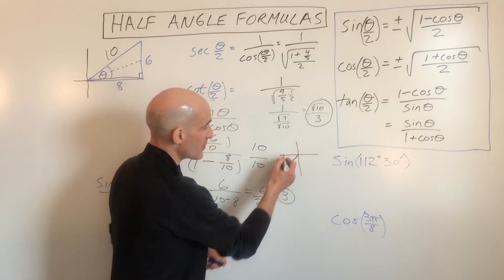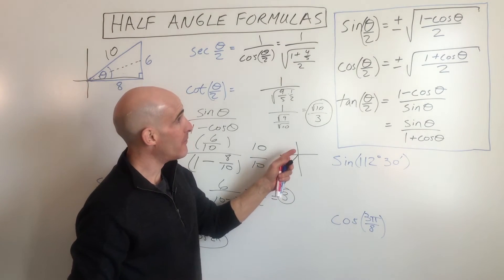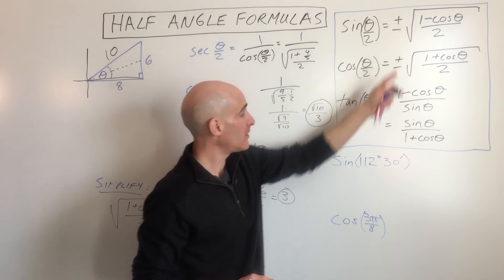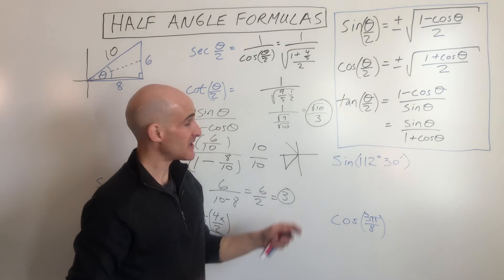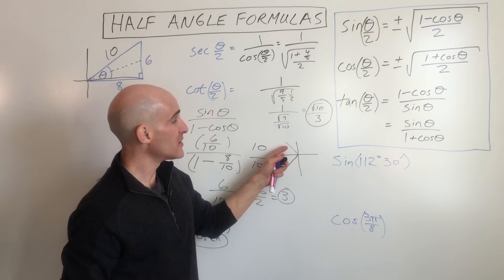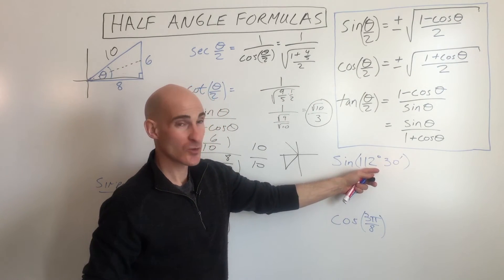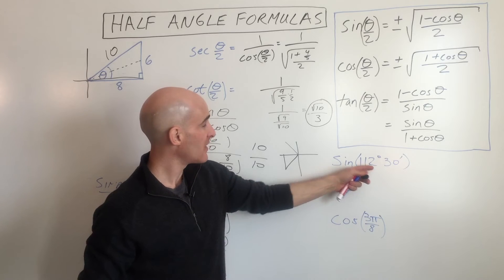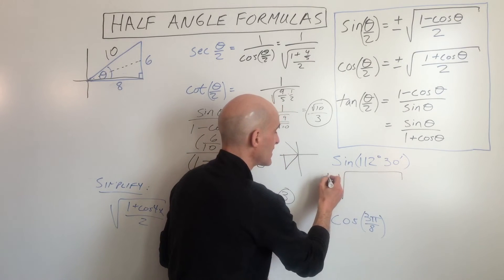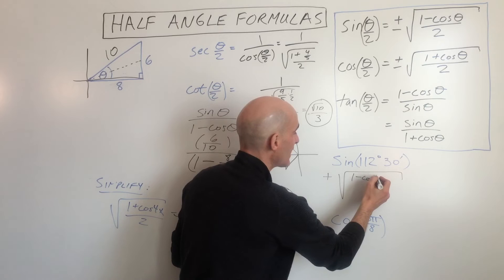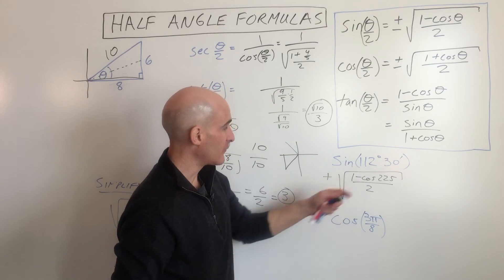On the unit circle, 225 degrees is in the third quadrant where sine is negative. But 112.5 degrees is in the second quadrant, where sine is positive. We're interested in where the half angle — 112.5 — falls, not where 225 is. Since sine is positive in the second quadrant, we use the positive version of the formula. That's an important point to pay attention to.